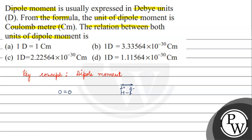Let's look at dipole moment. In chemistry, when we have dipole moment, there is an arrow pointing toward the electronegative atom, which is the cross level indicating electron density. Dipole moment is basically the product of charges into the distance between the charges.